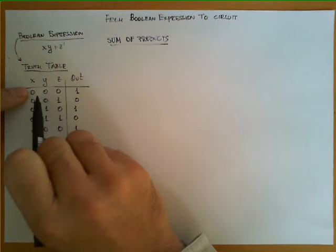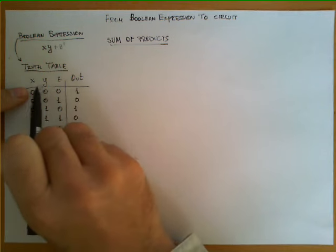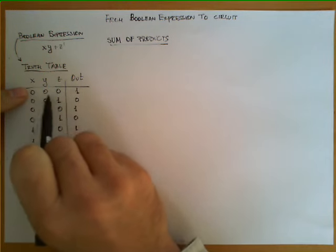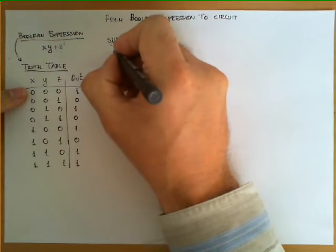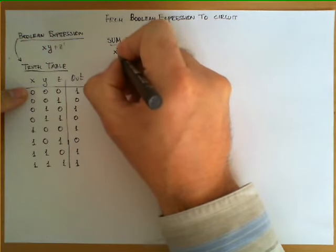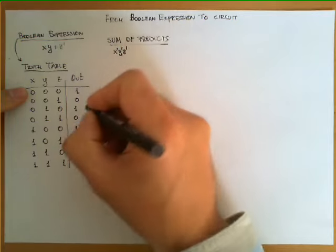And this product needs to be a Boolean expression that returns one when these symbols over here specifically have this combination. So this row over here will translate into the product x prime y prime z prime.